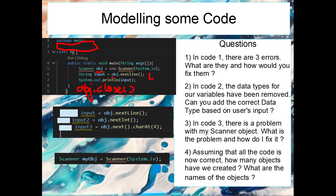In code 2 the data types for the variables have been removed — can you add the correct data types based on the user inputs? We've got input, input2, and input3 as the variable names. The first uses nextLine() with a capital 'L', so it should be a String because it's asking for text from the user. The second uses nextInt() so it's asking for a number, meaning we put int. The third gets a character from a string position, so since we only get one character it should be a char.